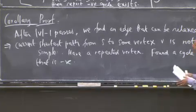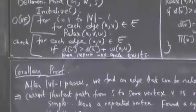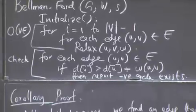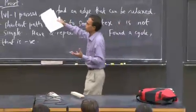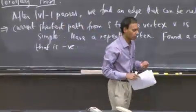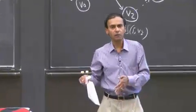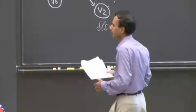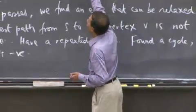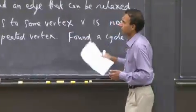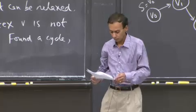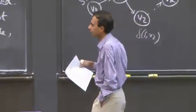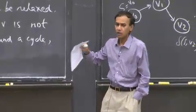It's a straightforward algorithm — it just relaxes all edges a fixed number of times, and it works. If you keep going past v minus 1 passes and still find relaxable edges, you've found a negative cycle, satisfying the termination condition. It's very similar to the generic shortest path algorithm, except you select all edges rather than choosing one, and you run a fixed number of passes.